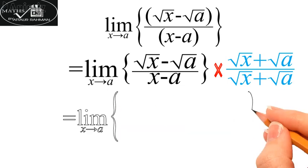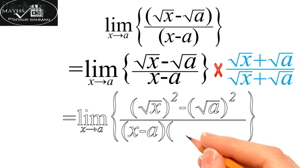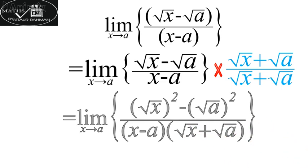So we get (√x)² - (√a)² upon (x - a)(√x + √a).